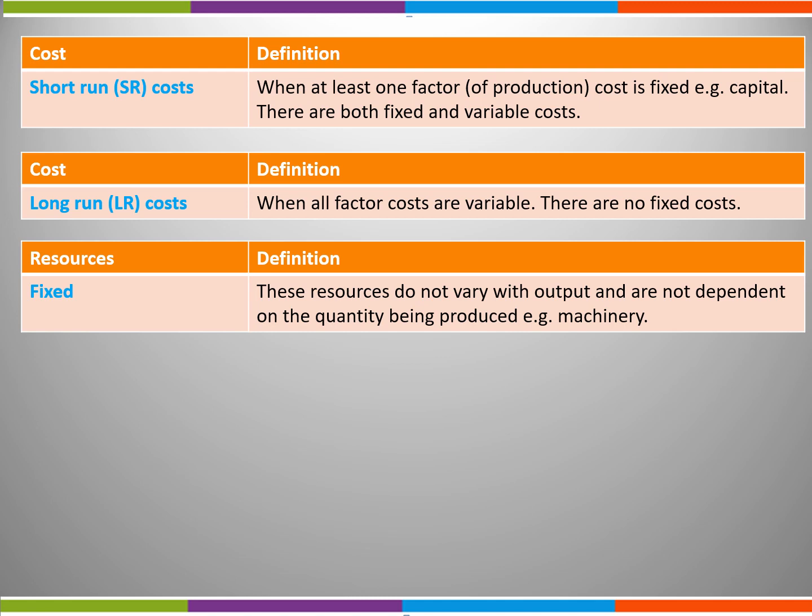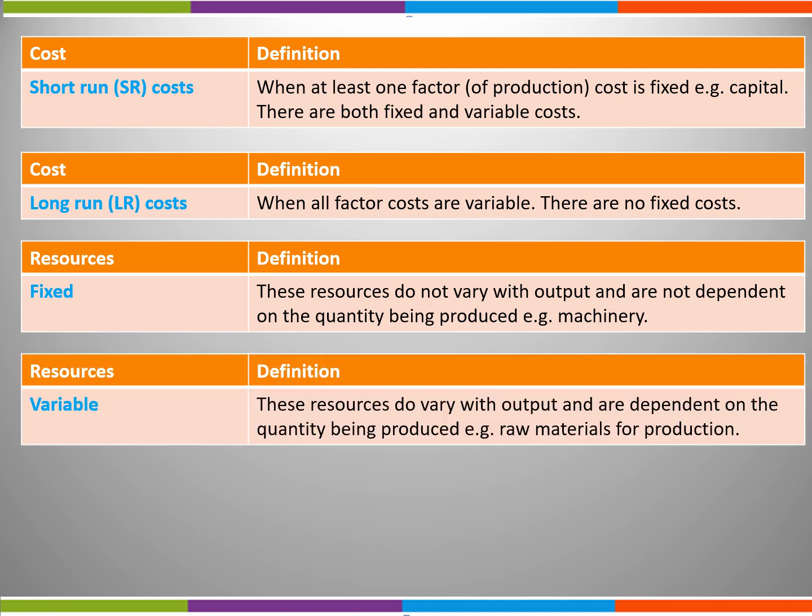Fixed resources are those resources that do not vary with output and are not dependent on the quantity being produced, for example machinery. Variable resources do vary with output and are dependent on the quantity being produced, for example the raw materials used in the production process.